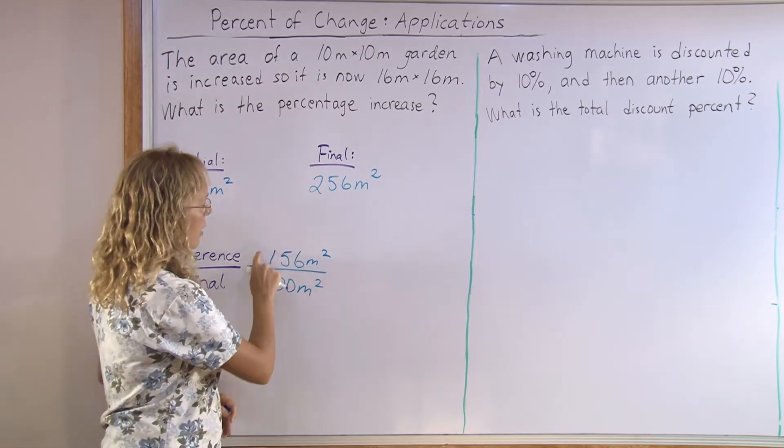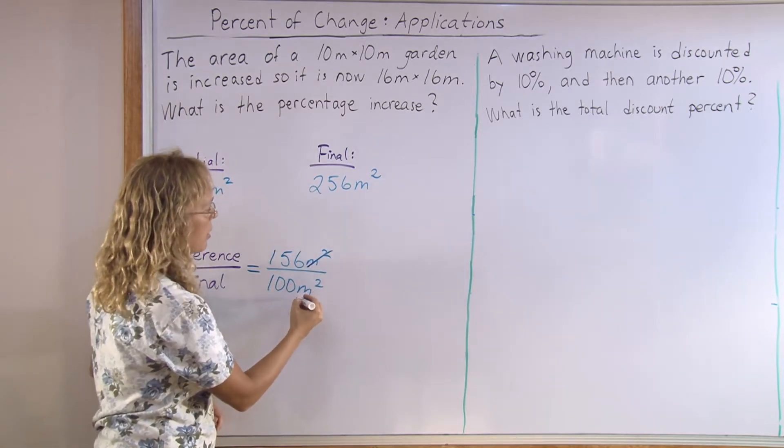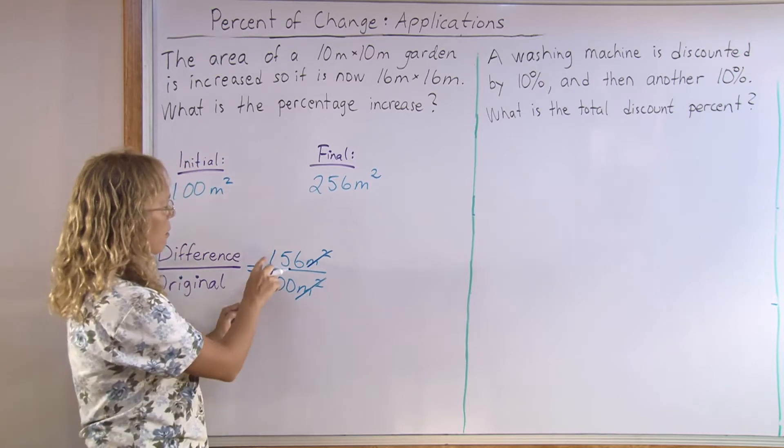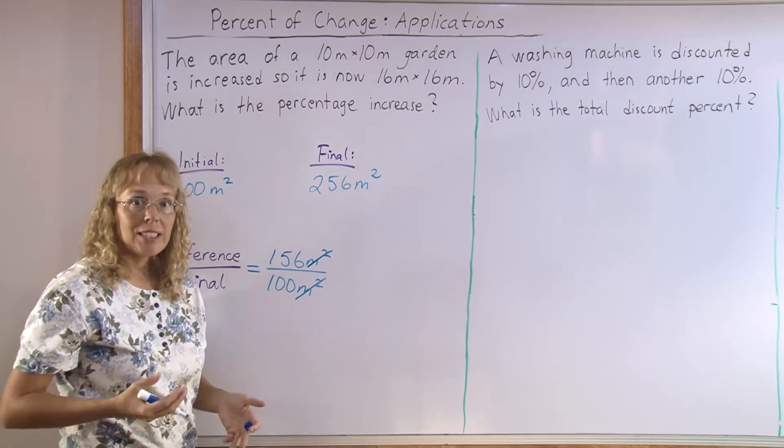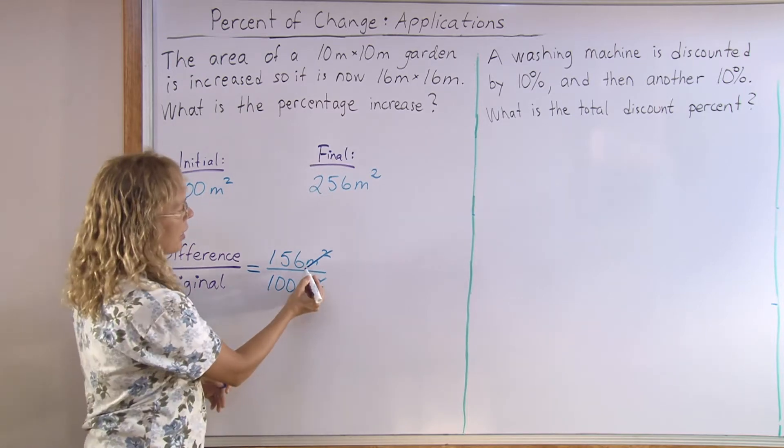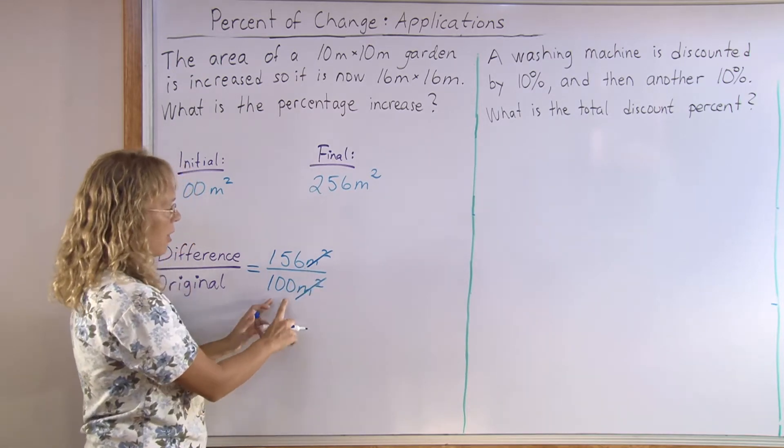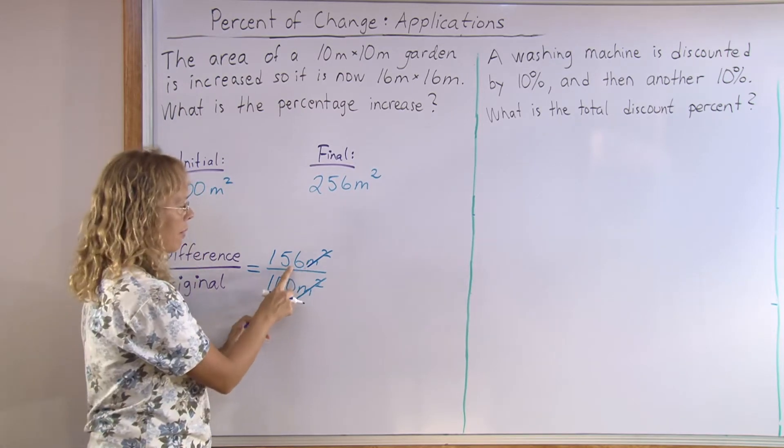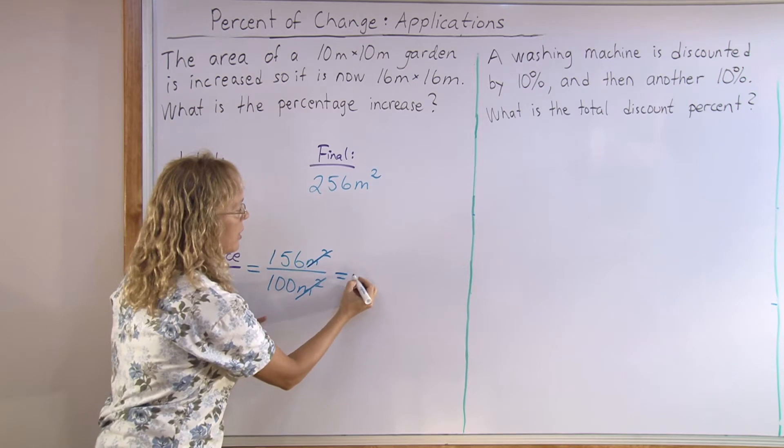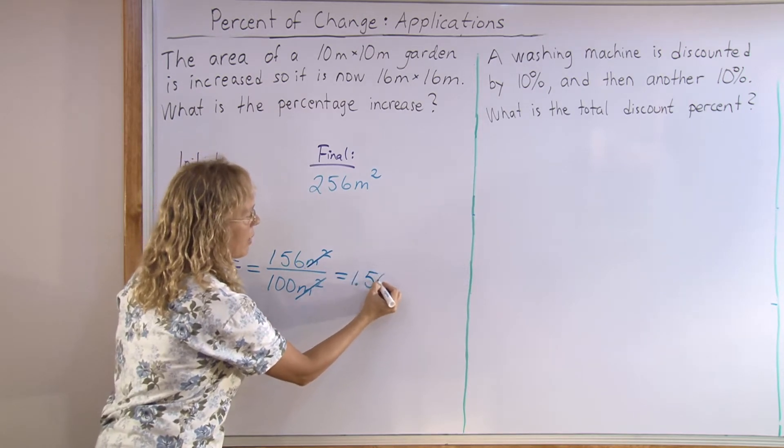Now, this here is a very easy calculation. These square meters cancel. And then we have 156 divided by 100. If you remember from your decimal division, if you think here is a decimal point, dividing by 100 means that you move the decimal point two steps this way. So, it goes here. And the answer is 1.56.